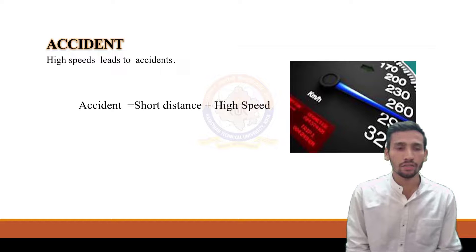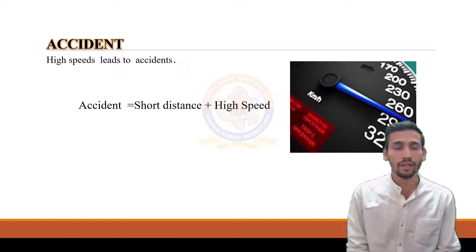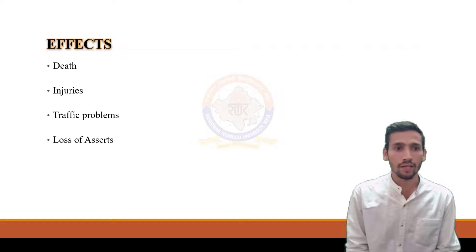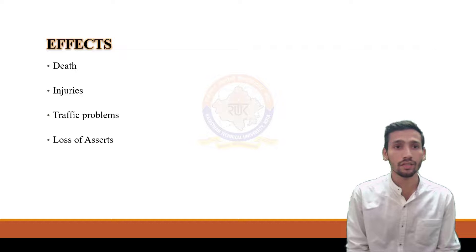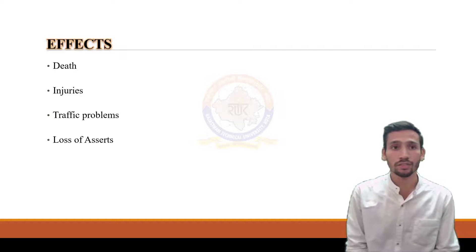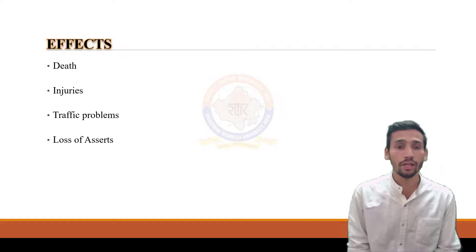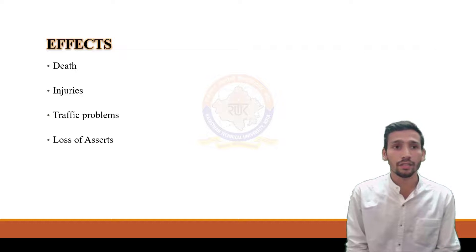The next slide is Accident. The main reason for accidents is high speed and short distance between vehicles. The next slide is Effect. Excessive speed is a key risk factor for road accidents and greater severity of injuries in the event of a crash. Due to accidents, people can be killed or injured, and traffic problems can also occur.